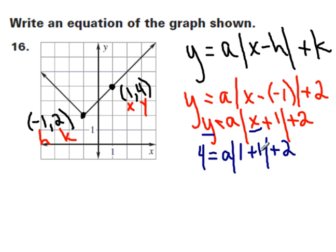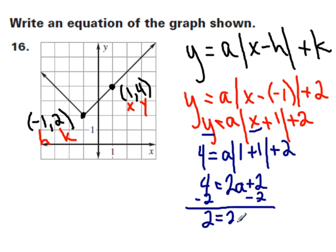So now I can combine like terms and simplify using order of operations. So 1 plus 1 inside the absolute value is 2. Then 2 times my a gives me 4 equal to 2a plus 2. I'm trying to get the a by itself, so I'm going to subtract 2 from both sides. And 2 is equal to 2a. Divide both sides by 2, and the a is equal to 1.